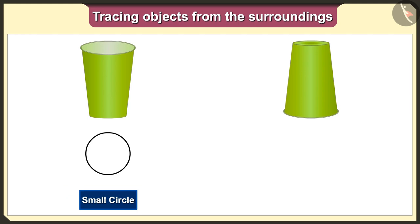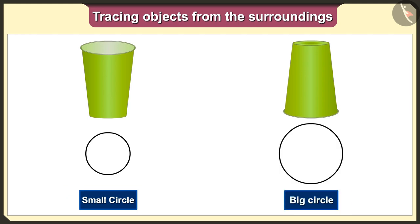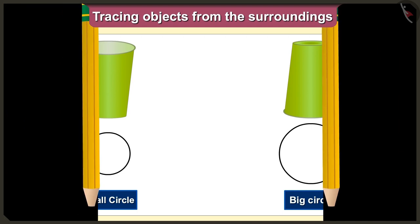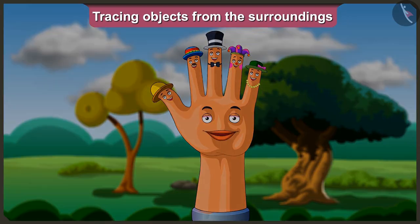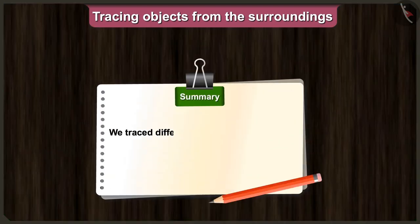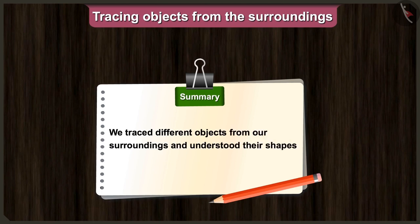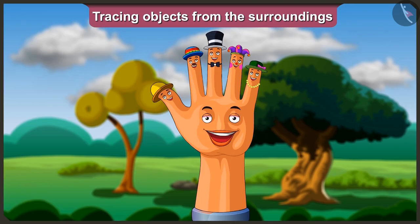If we keep the glass straight and trace it, we will get a small circle shape, and if we keep it upside down and trace it, we will get a bigger circle. Friends, in this video we understood the shapes we get when we trace objects from our surroundings. In the next video, we will understand some interesting facts relating to tracing with the help of Pumpkin and Tall Man.